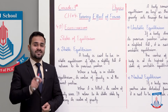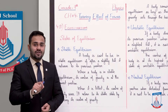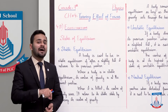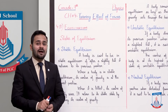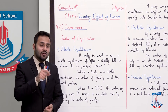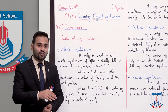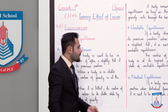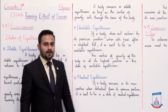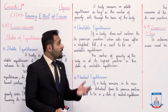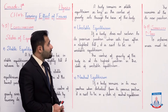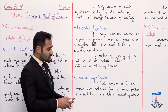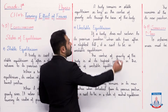Just as you tilt the body, its center of gravity rises. But when it comes back to the stable state, the center of gravity is at the lower position — meaning it returns to the same position. A body remains in stable equilibrium as long as the center of gravity acts through the base of the body.